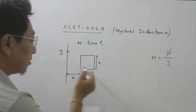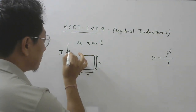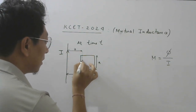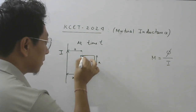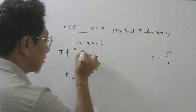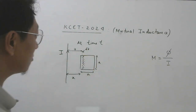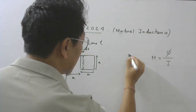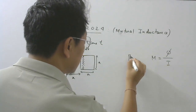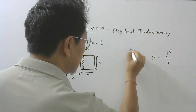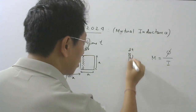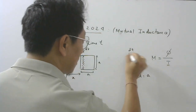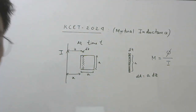To find the flux through the loop: at some arbitrary distance Z from the wire, I consider a small area — a thin rectangular strip of thickness dZ. So this small strip has length A and thickness dZ. The small area dA = A·dZ, that is length times breadth.